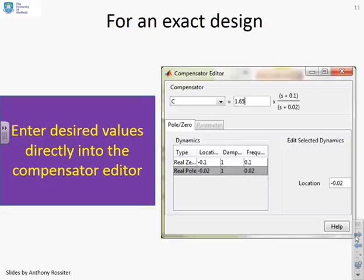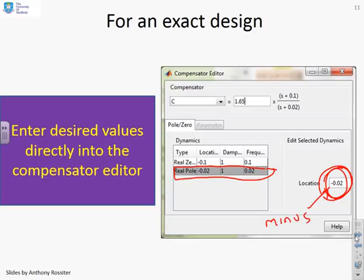If you want to get an exact design, you can of course put the values directly into the compensator editor. I've highlighted pole, and I can put the pole value directly in there. Don't forget the minus sign because this is technically a left-half-plane pole.